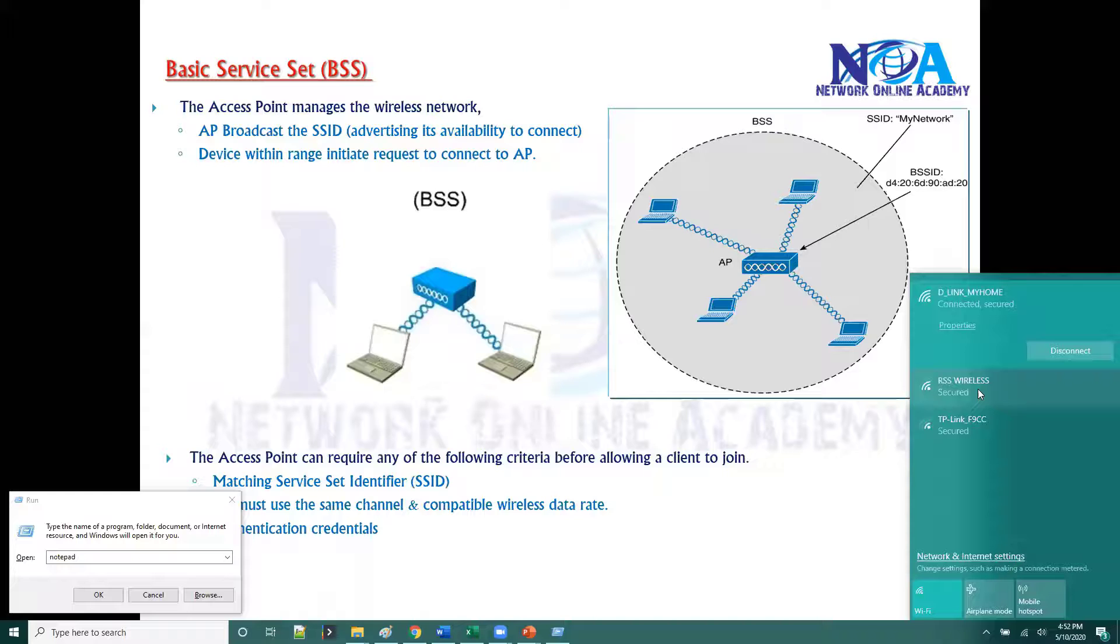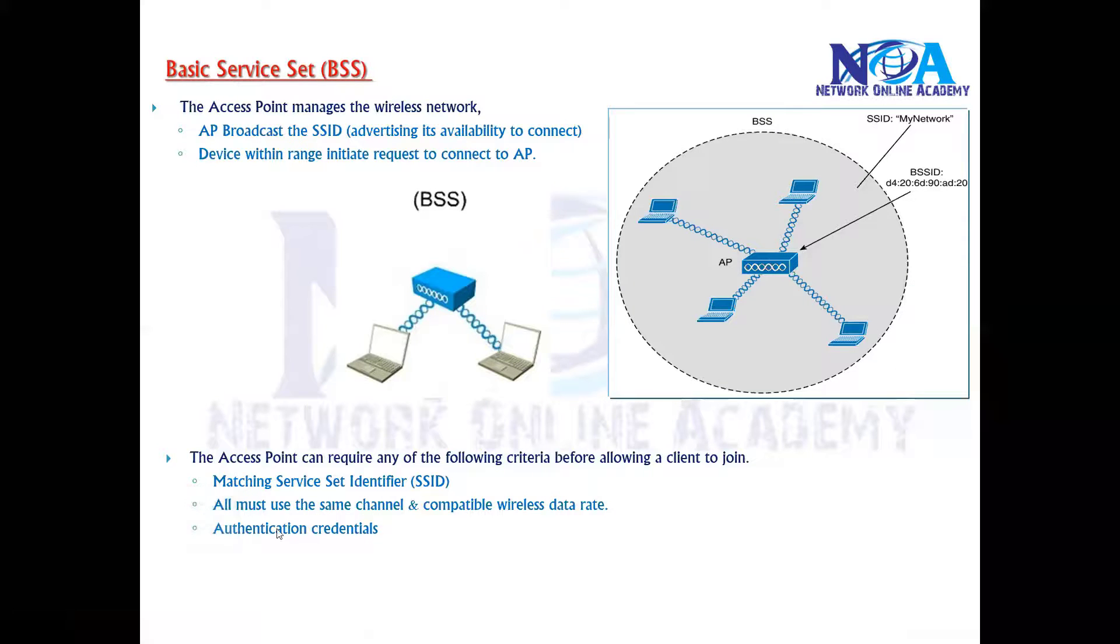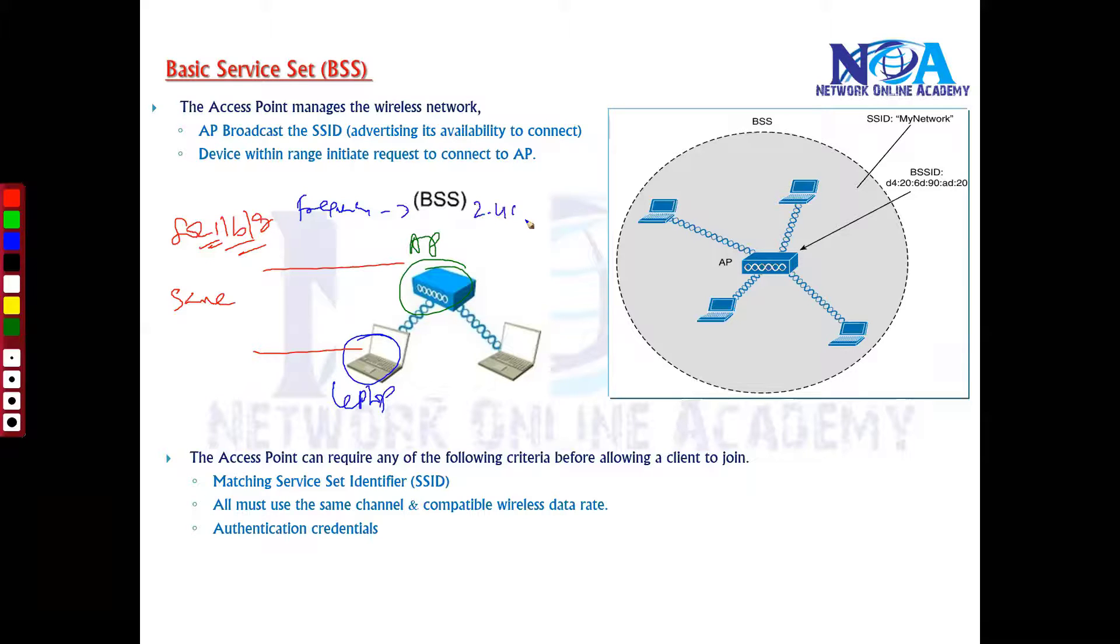Apart from that, we also need to make sure that the devices you are using, like here I'm using my laptop, and whatever the access point, they must be running the same standards. There are some IEEE 802.11 standards like B, N, G, or the commonly used ones, and they use specific frequency bands like 2.4 or 5 gigahertz bands. We'll talk about this in the frequency section later on.